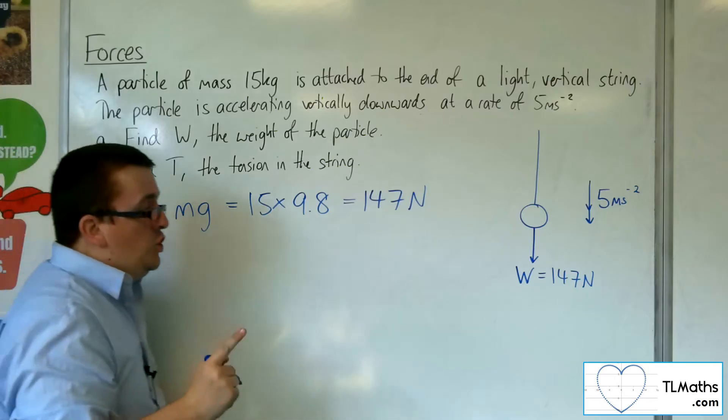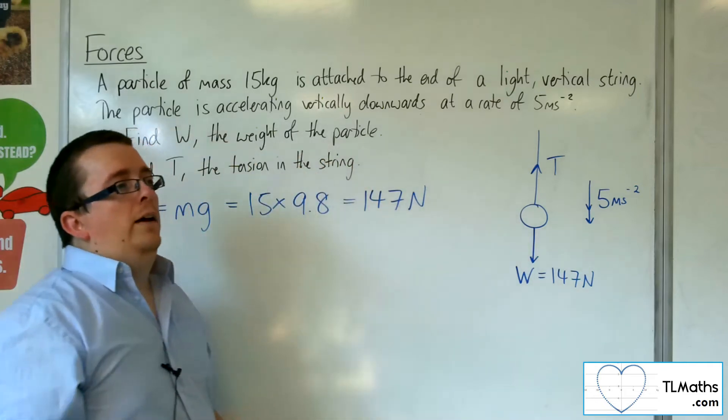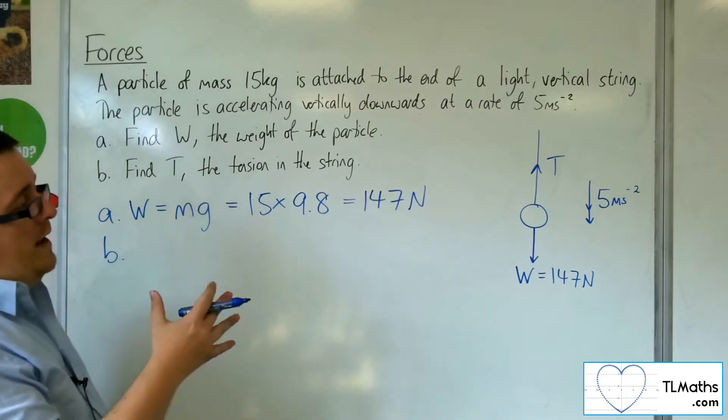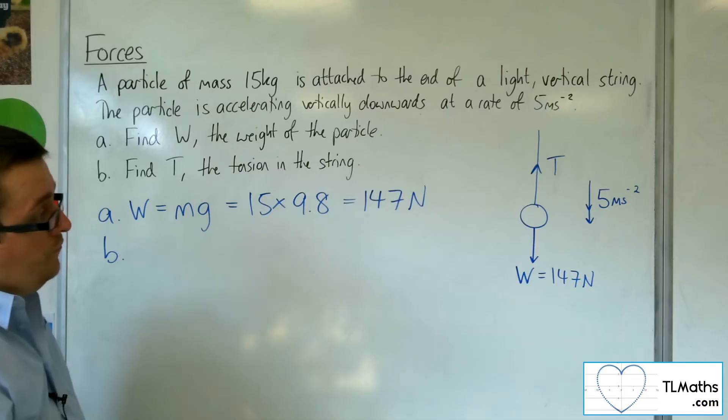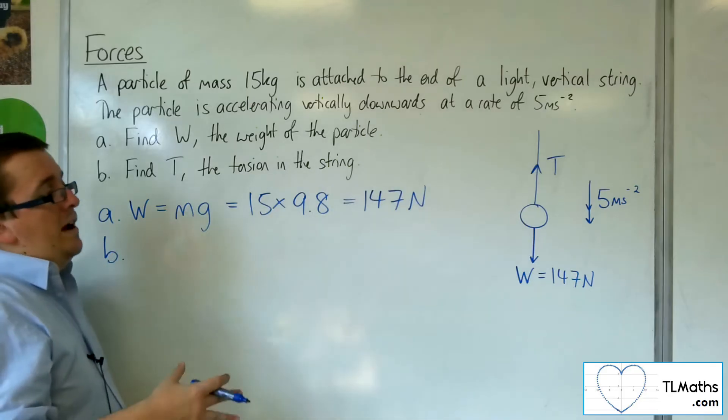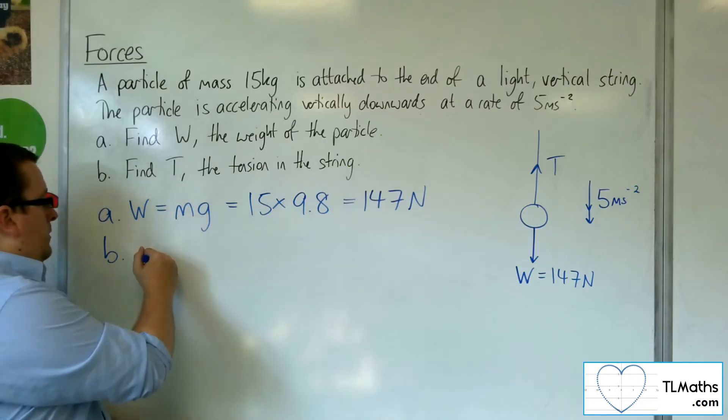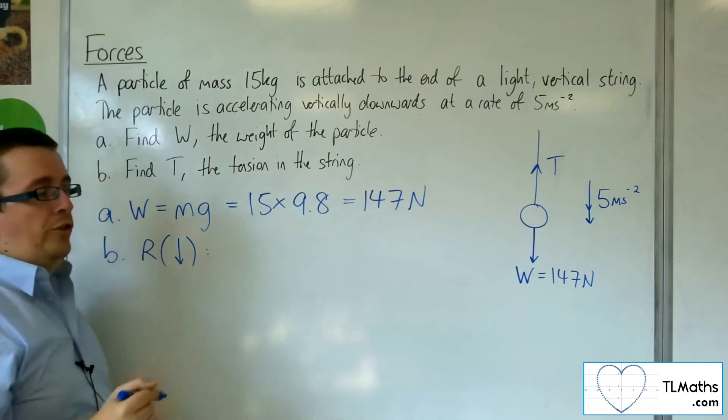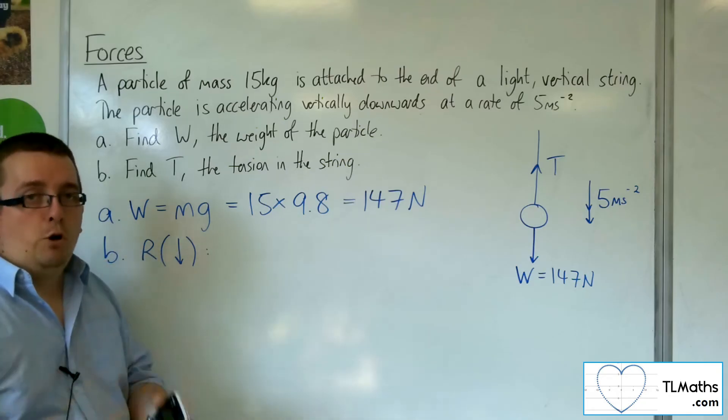The tension in the string is what's trying to pull the string back into position. We've got a situation where we're accelerating downwards. I've got the weight of the particle and the tension to consider. We're going to resolve the forces. I'm going to resolve vertically downwards, taking downwards as positive. It makes sense to take downwards as positive as that is the direction of motion.